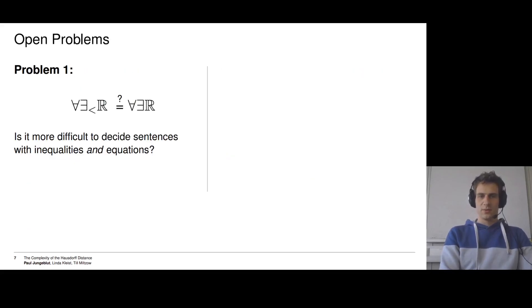Okay, let me finish with two open problems. First problem is: are these two different complexity classes that we considered, strict ∀∃ℝ and ∀∃ℝ, actually different or are they the same? Being different would imply NP ≠ PSPACE, which is believed, but we don't expect to prove any time soon.